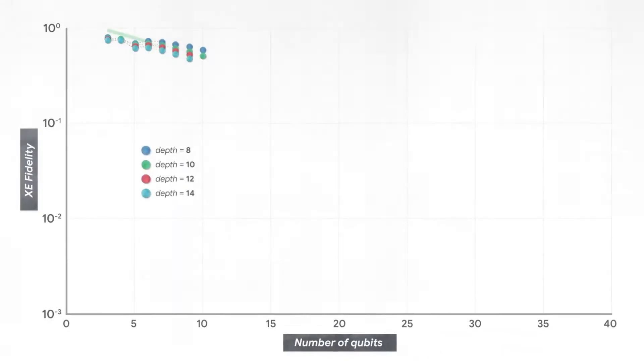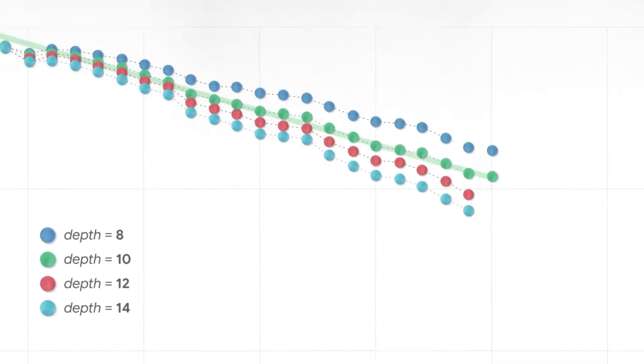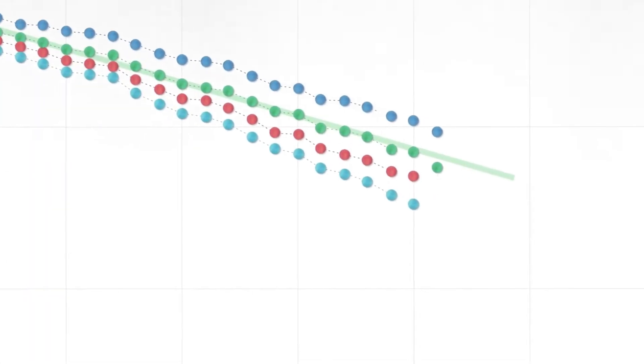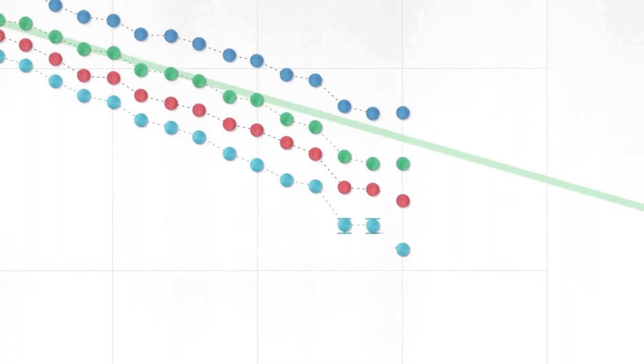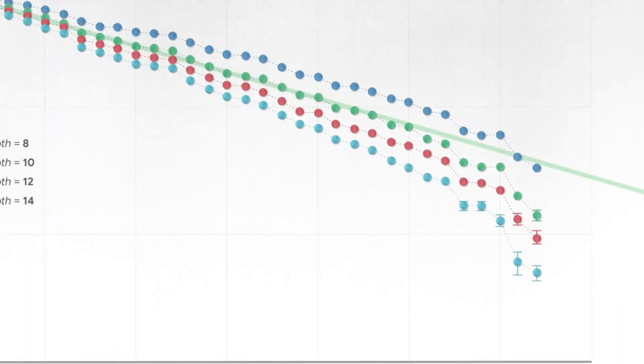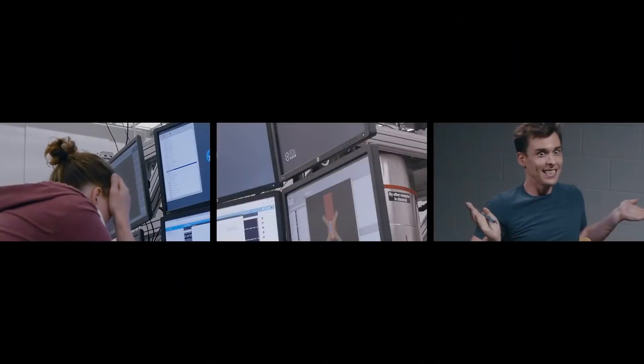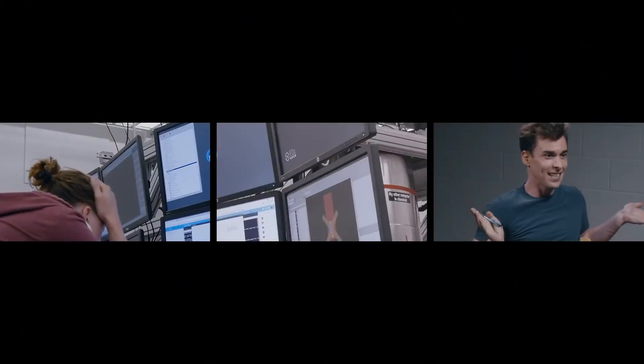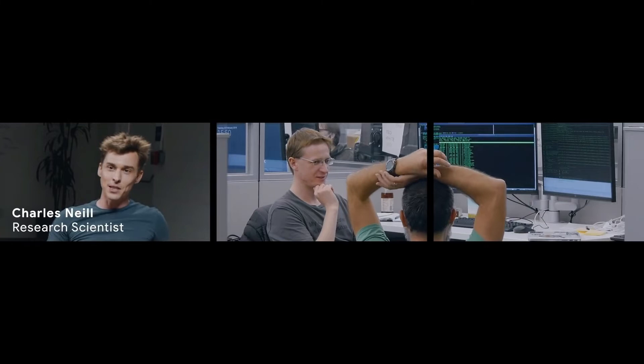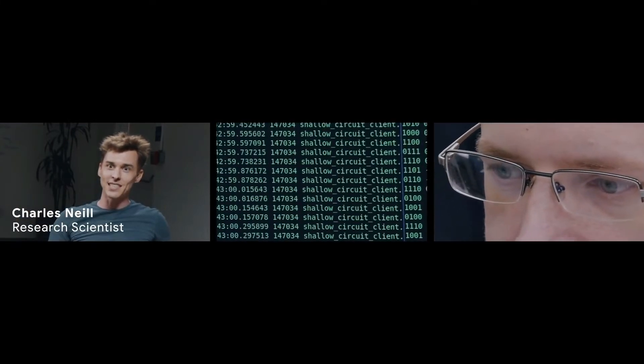When the experiment started we were getting data from the experimentalists. We saw initially a beautiful straight line corresponding to our predictions. Then right before we hit supremacy, they dropped much faster and it fell below the threshold where it needed to be. There's nothing we can do because we don't know how to analyze past that. So everyone's like, oh we're screwed, because it's just getting really really bad at large number of qubits.